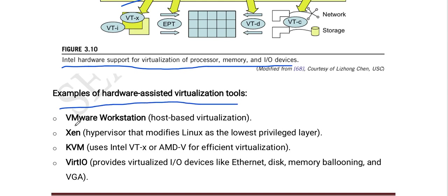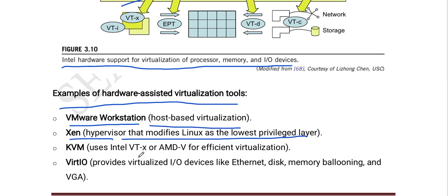VMware Workstation uses host-based virtualization. Xen hypervisor modifies Linux as the lowest privileged layer. KVM uses Intel VT-X and AMD-V for efficient virtualization.